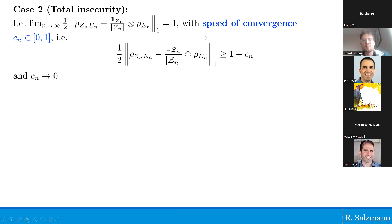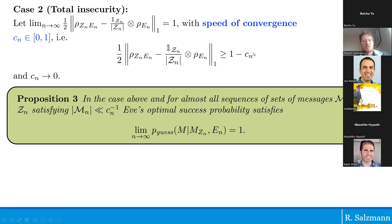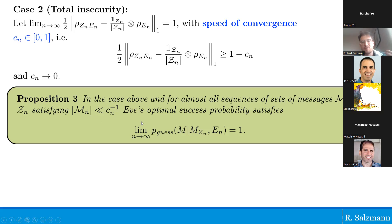In the strong converse region, the decoupling error blows up. We introduce the speed of convergence c_n going to zero, and assume the decoupling error is lower bounded by 1 − c_n. The total insecurity result says: for almost all sequences of message sets M_n whose cardinality is bounded above by 1/c_n, Eve's guessing probability goes to 1 as n → ∞. She can guess with certainty even though M_n is exponentially large, meaning the communication is totally insecure.